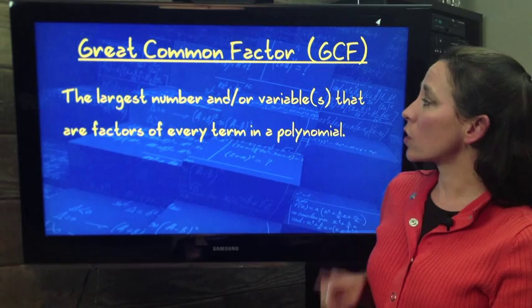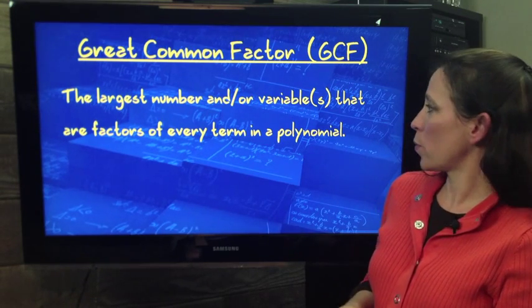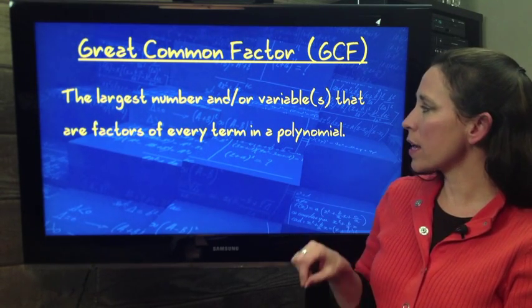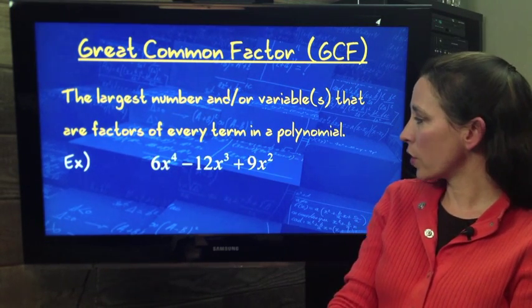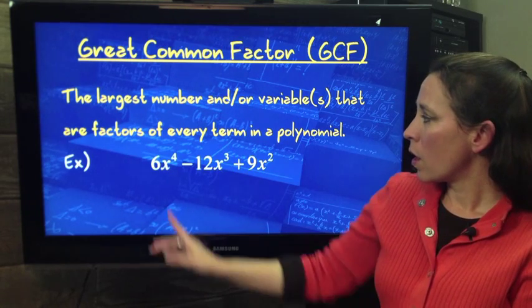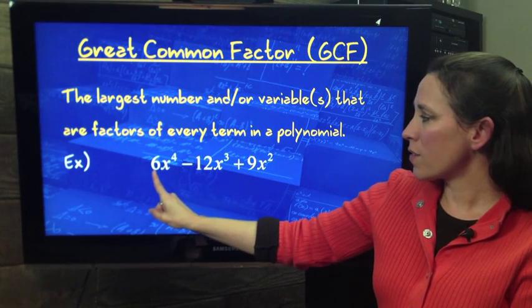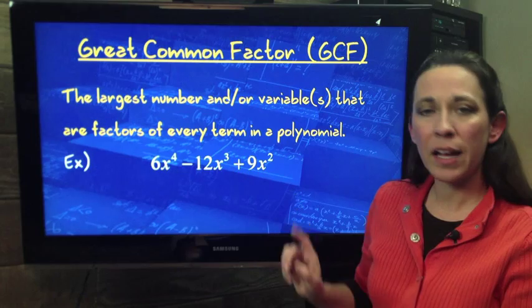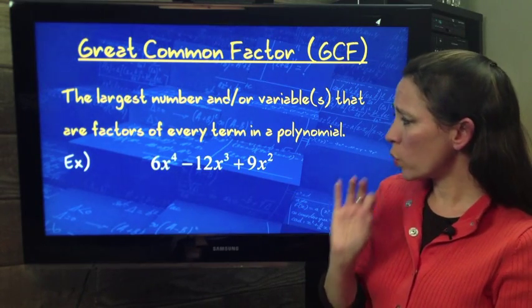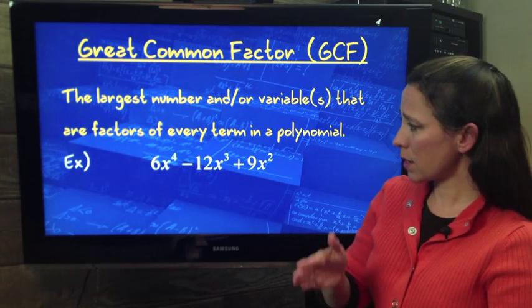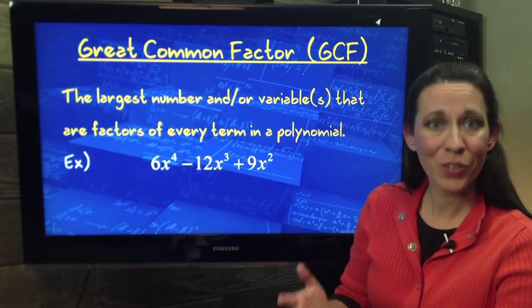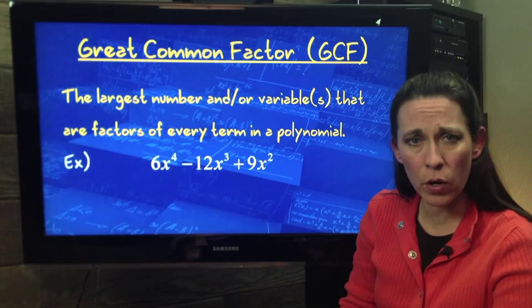What is that? It's the largest number and/or variables that are factors of every term in a polynomial. So let's look at this trinomial here. As our coefficients, we have 6, negative 12, and 9. So what's the largest number that would divide evenly into 6, 12, and 9? Good. 3. So 3 is going to be part of our GCF.